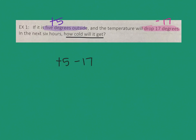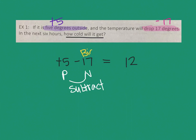These are different numbers. Remember, when you have two different types of numbers you really subtract. So 17 minus 5 is 12. The biggest number is 17, and the biggest number tells you what sign the answer will be. So it's going to be negative 12 degrees.